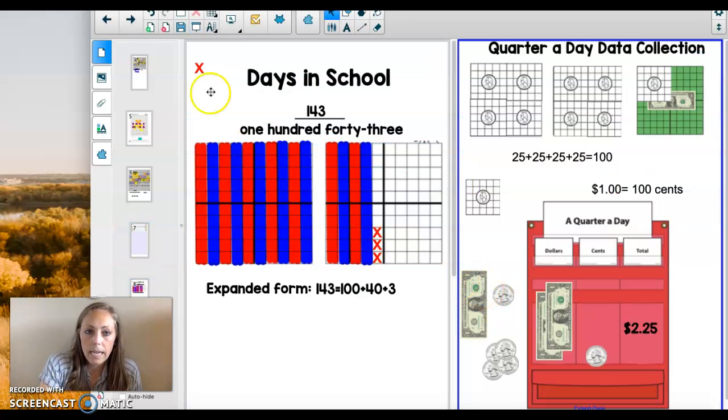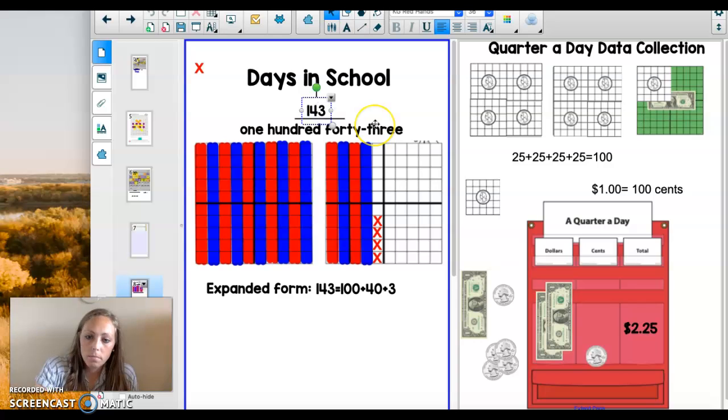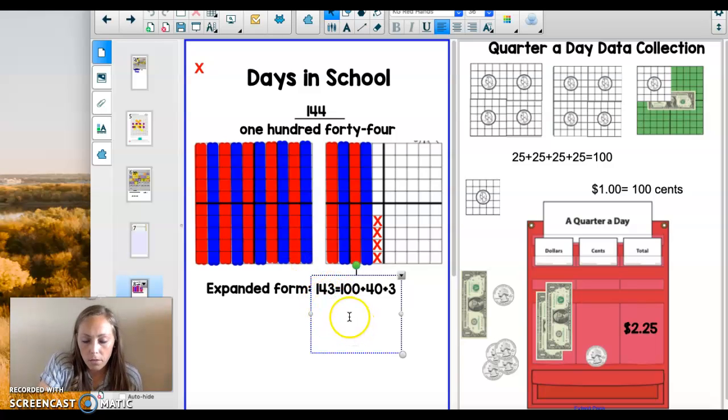Now I get to do days in school. Let's add another X for today. See if you can write down the number of days in school before I can. How many groups of 100? One still. How many groups of 10? Still four groups of 10. And how many extra ones? Four. So our number is 144. Yesterday we did 143 equals 100 plus 40 plus 3. But today, 144 equals 100 plus 40 still, but not 3 anymore. It's plus 4.